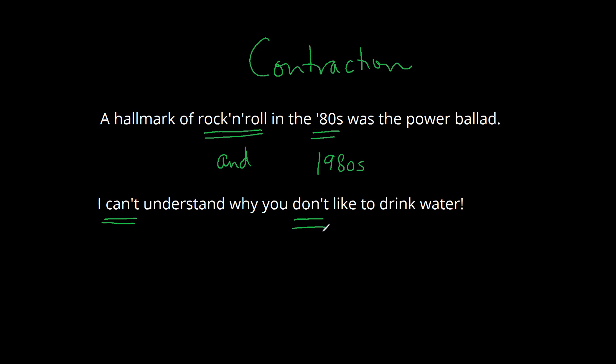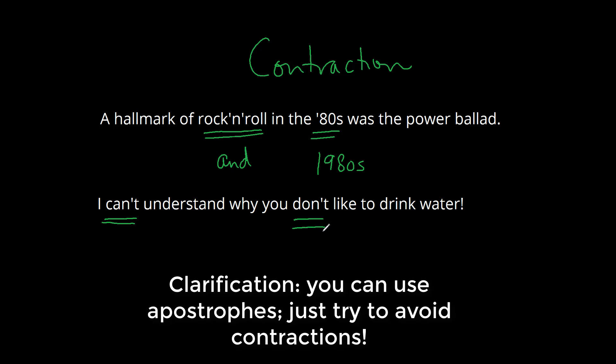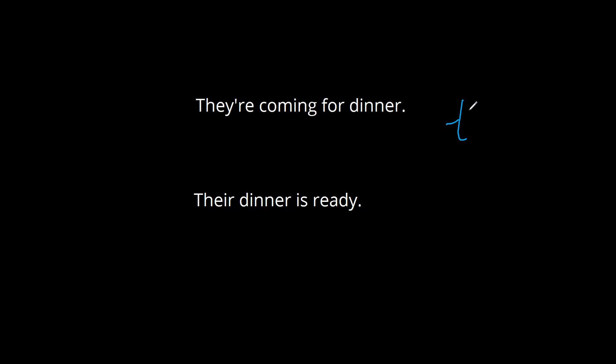In academic writing you don't want to use apostrophes as much as you can, because it seems a little bit colloquial or common. There are a few contractions you especially want to watch out for, and these are they're, which stands in for they are, whose, which stands in for who is, and it's, which means it is.